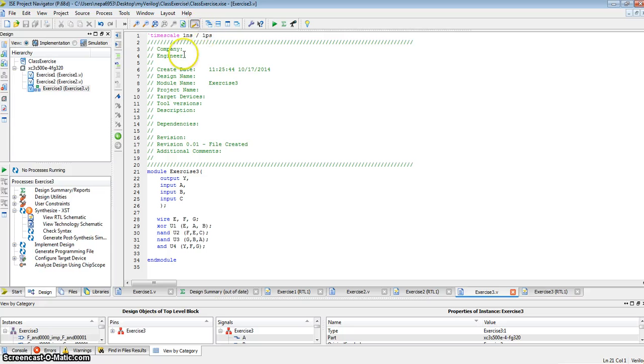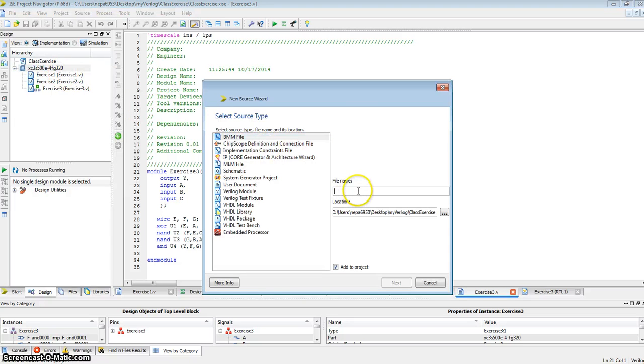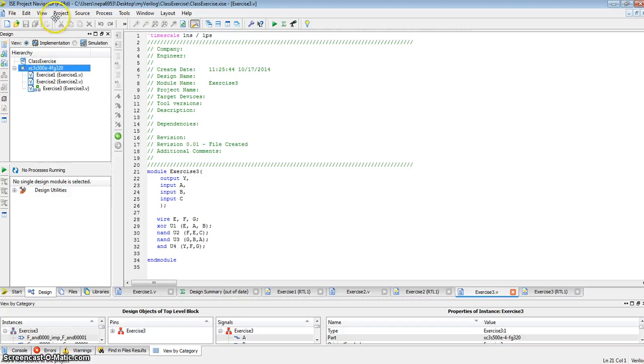So I'm using Xilinx ISE version 14.6. Let me add a new source. I will call this final exercise. Add to project. Cancel. I added a wrong source.